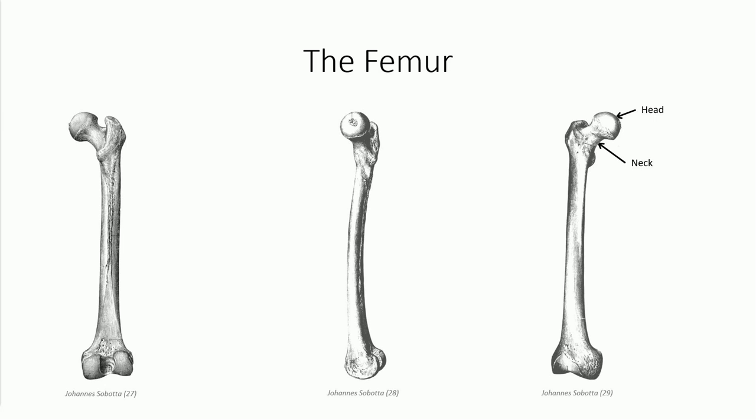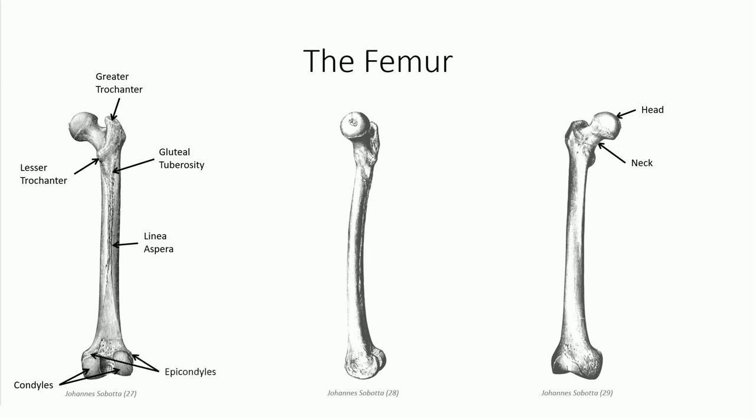The neck attaches to an oblique bony mass formed from the presence of the greater and lesser trochanters, which serve as sites for muscular attachment. The shaft angles down towards the knee. On the posterior surface of the shaft, the gluteal tuberosity — which serves as an attachment point for the gluteus maximus muscle — blends inferiorly with a prominent ridge of bone, the linea aspera, which serves as an elongation site for numerous muscle attachments. The femur ends in two prominent condyles that articulate with the tibia to form the knee joint. Epicondyles are found in close approximation to the medial and lateral condyles, serving as sites for tendon and ligament attachment. The adductor tubercle, found just proximal to the medial epicondyle, permits attachment of a prominent muscle in the medial compartment of the thigh.